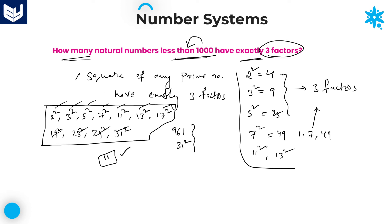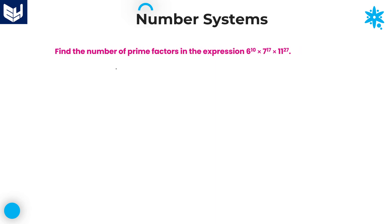The important point to remember is: the square of any prime number has exactly 3 factors. In this way you can solve these kinds of problems. Both the previous problem and this problem are very important. Next, the last question in this session: Find the number of prime factors in the expression 6^10 × 7^17 × 11^27.